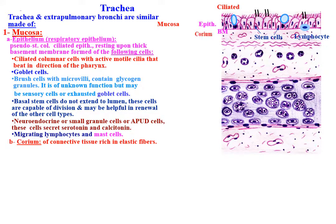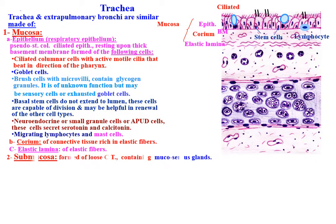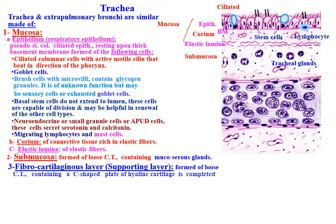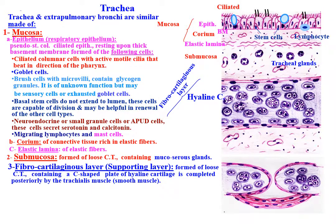The corium is of loose connective tissue rich in elastic fibers, followed by an elastic lamina formed of elastic fibers. The submucosa is formed of loose connective tissue containing mucoserous glands. The fibrocartilaginous or supporting layer is formed of loose connective tissue containing a C-shaped plate of hyaline cartilage, which is completed posteriorly by the trachealis muscle, a smooth muscle.